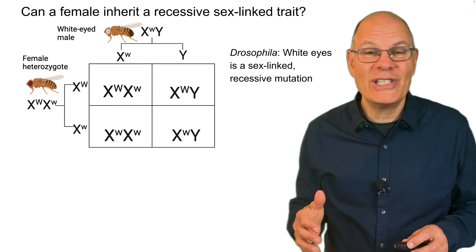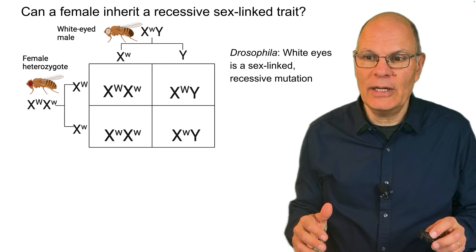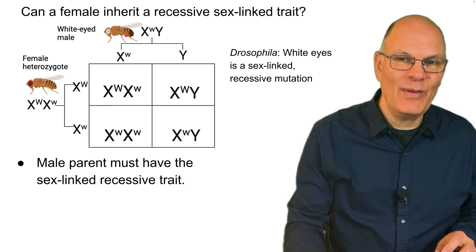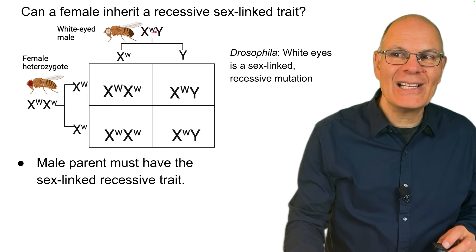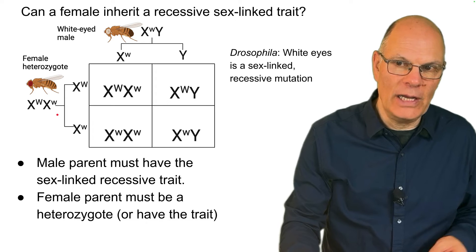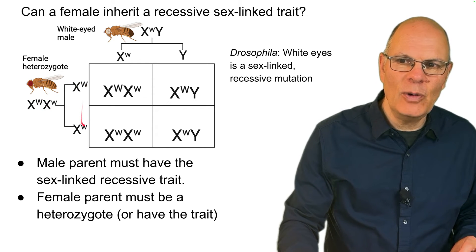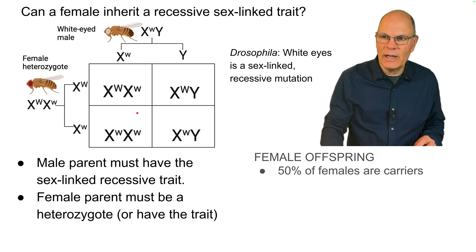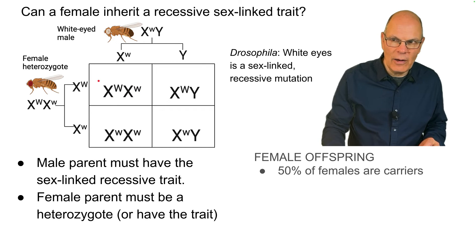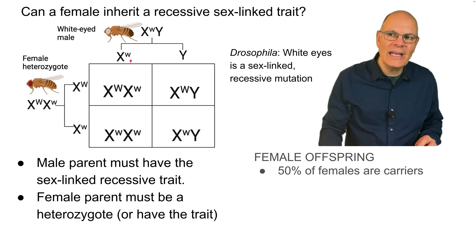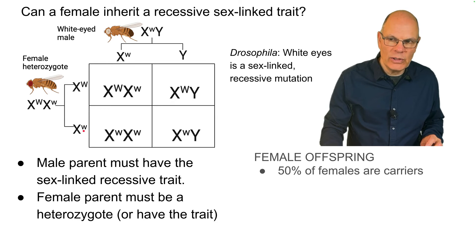Can a female inherit a recessive sex-linked trait? Absolutely, but it's uncommon. Here's what has to happen: the male parent must have the sex-linked recessive trait — here we have a white-eyed fruit fly, X little w, Y. The female must be a heterozygote — X big W, X little w. When we create the Punnett square, we can see that among the female offspring, 50% are carriers: they get the normal allele for red eyes from their mom and the recessive allele for white eyes from their dad. The other 50% get the recessive allele from both parents.